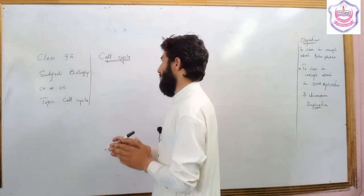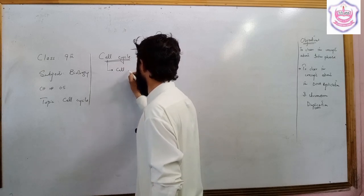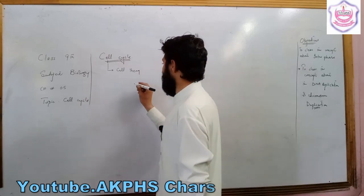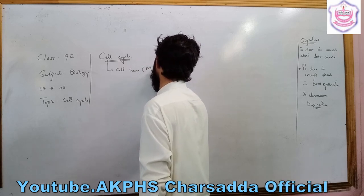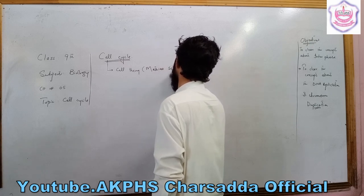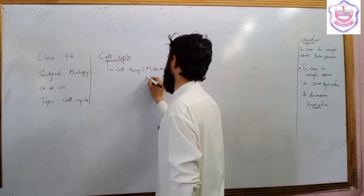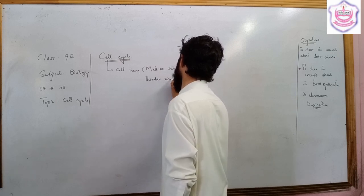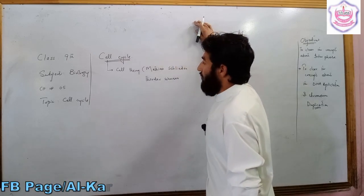According to the cell theory, which is proposed by two scientists — one is known as Matthias Schleiden, while the second one is known as Theodor Schwann — we go to the cell and the cell theory proposed by these scientists.